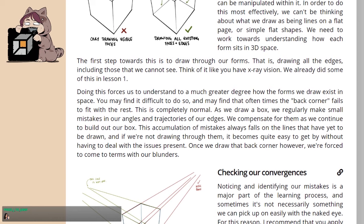Doing this forces us to understand to a much greater degree how the forms we draw exist in space. You may find it difficult to do so, and may find that oftentimes the back corner fails to fit within the rest. This is completely normal. As we draw a box, we regularly make small mistakes in our angles and trajectories of our edges. We compensate for them as we continue to build out our box. This accumulation of mistakes always falls on the lines that have yet to be drawn. And if we're not drawing through them, it becomes quite easy to get by without having to deal with the issues present. Once we draw that back corner, however, we're forced to come to terms with our blunders.